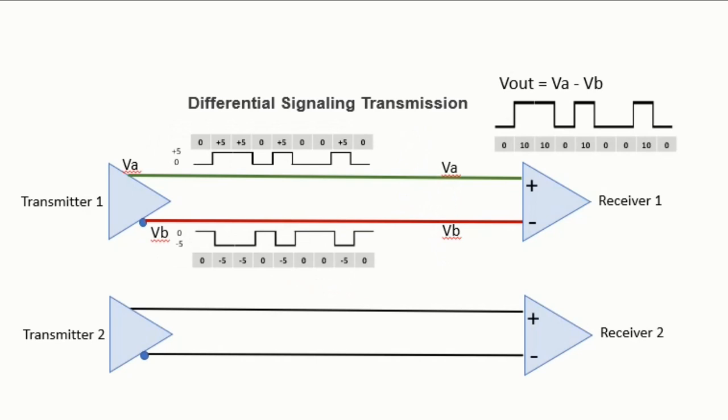Also note that the receiver decodes the signal by subtracting the second transmitted signal from the first transmitted signal. The resultant is simply the first transmitted signal amplified.